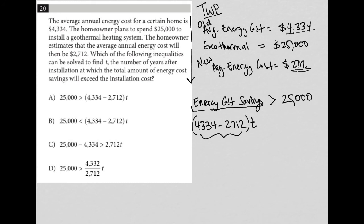So we want that value times the time or the number of years to be greater than $25,000. And we find that in choice B here. So choice B is the best answer to this question.